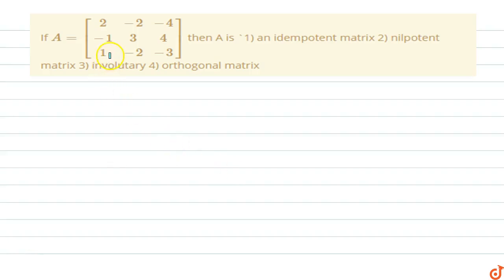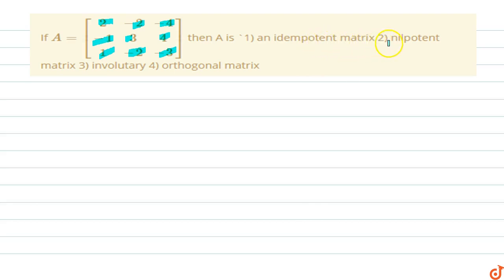In this question, matrix A has elements: 2, minus 2, minus 4, minus 1, 3, 4, 1, minus 2, minus 3. Then A is — first option: an idempotent matrix; second option: a nilpotent matrix; third option: an involuntary matrix; fourth option: an orthogonal matrix. So let's find out what this matrix gives us.